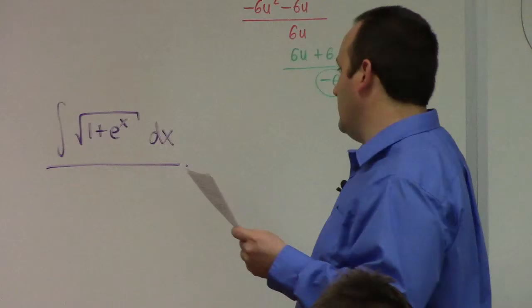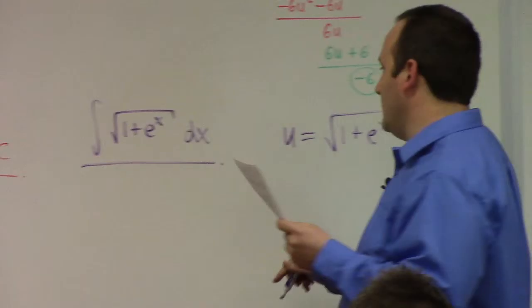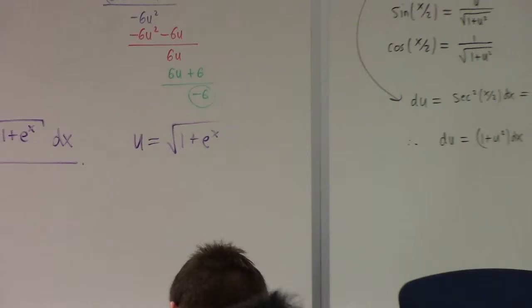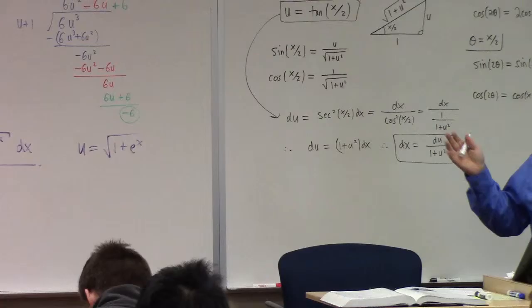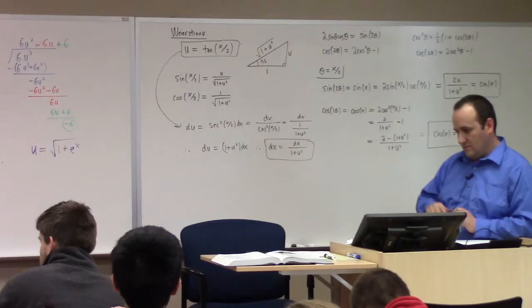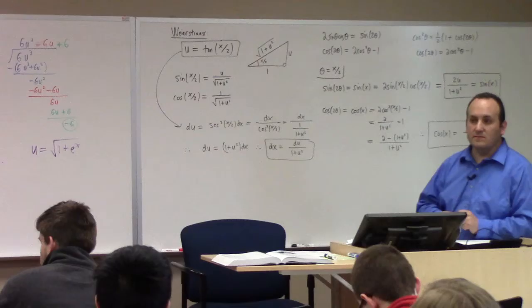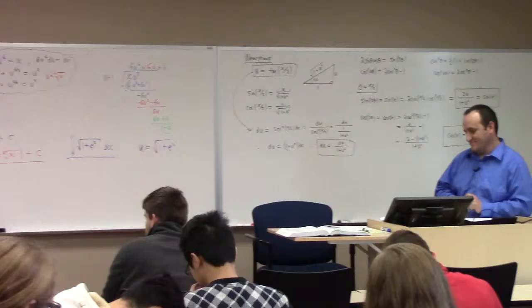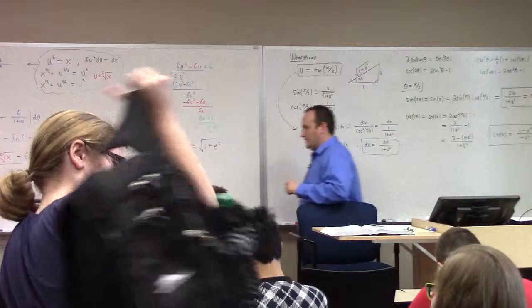There's one other kind of example in this section — I'll write it but not work it out yet; we'll do it next time. The other kind involves a substitution like u equals the square root of 1 plus e to the x, which converts that integral to a rational function. Tomorrow we'll do one more example and then talk about numerical integration.